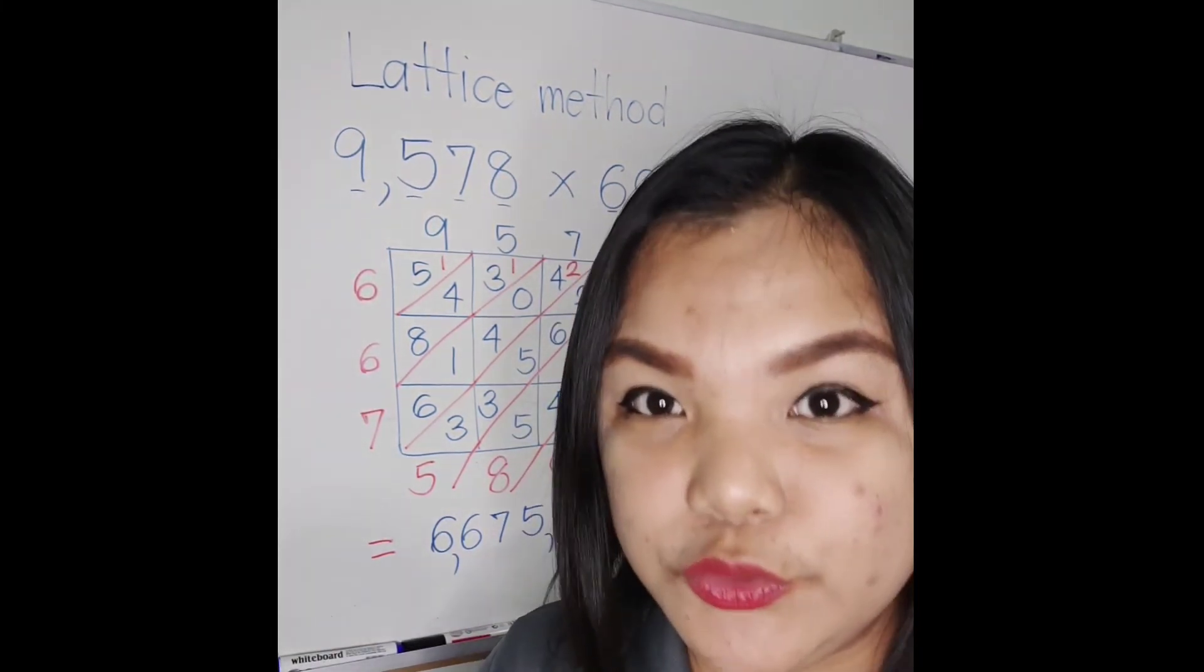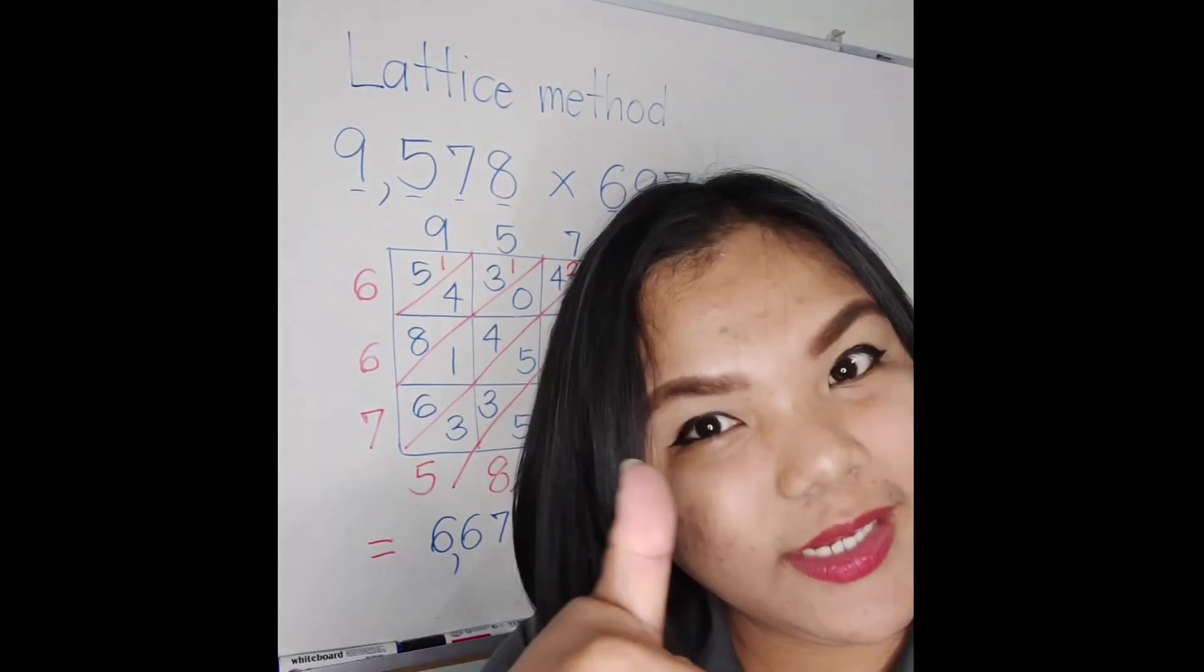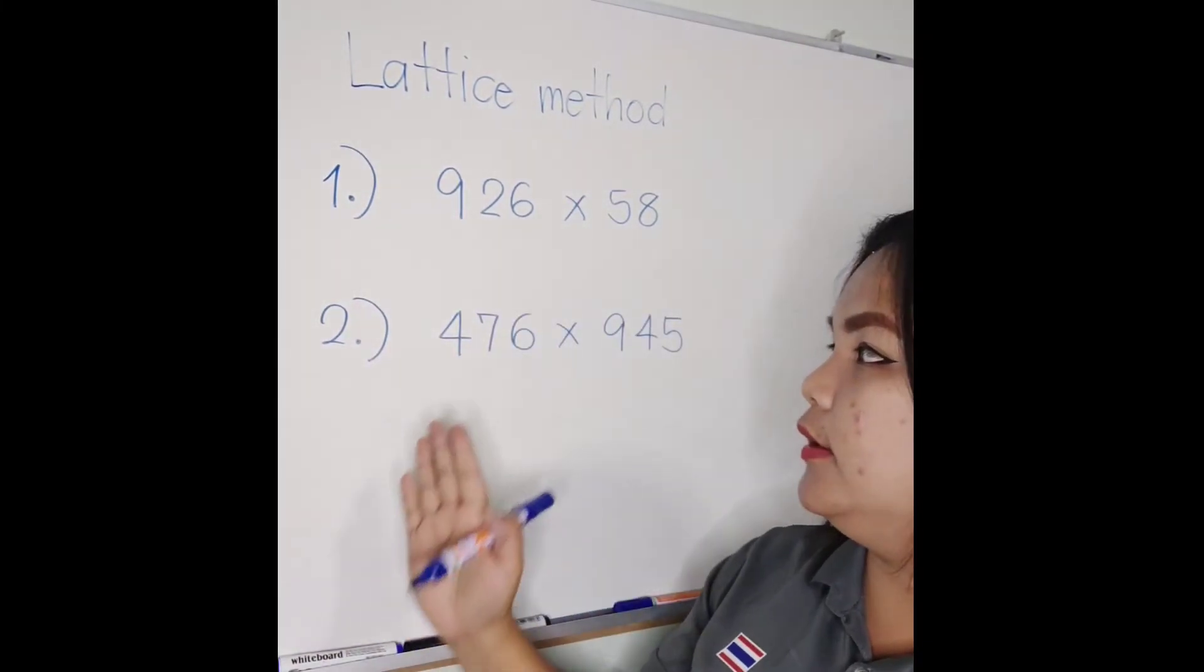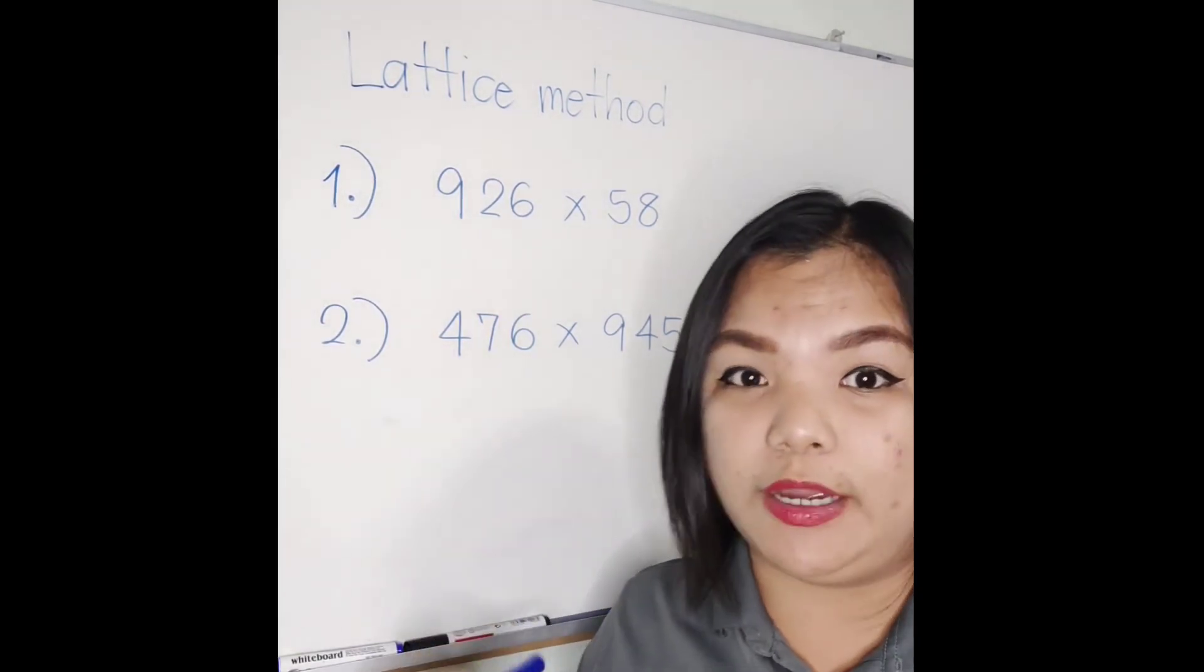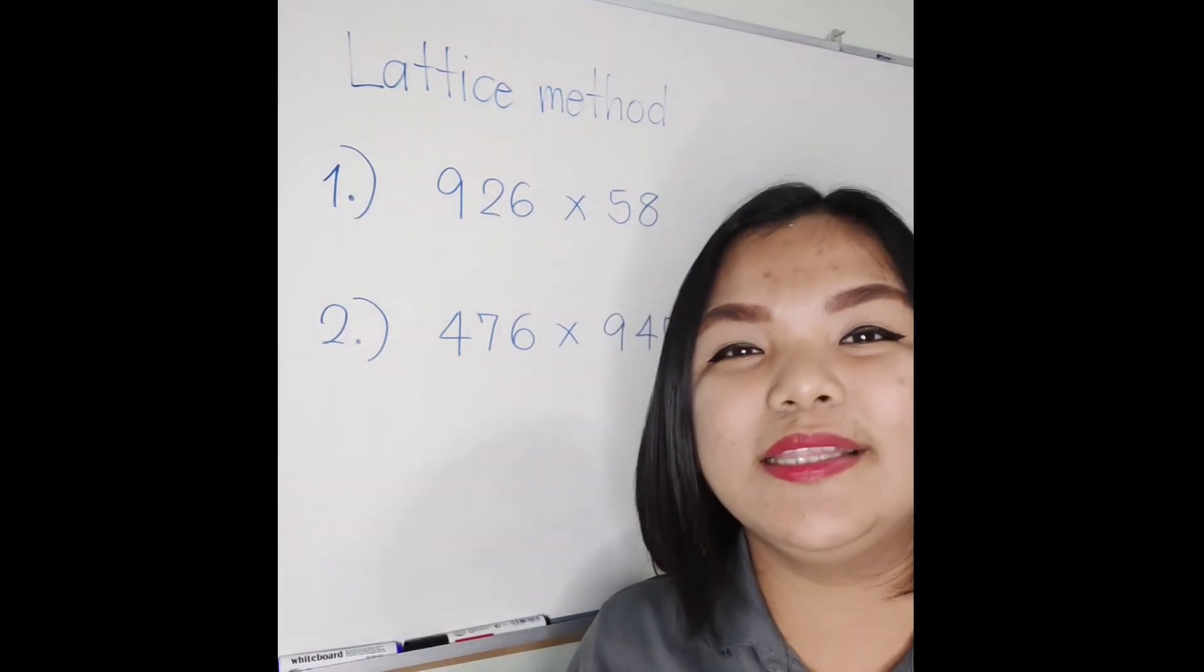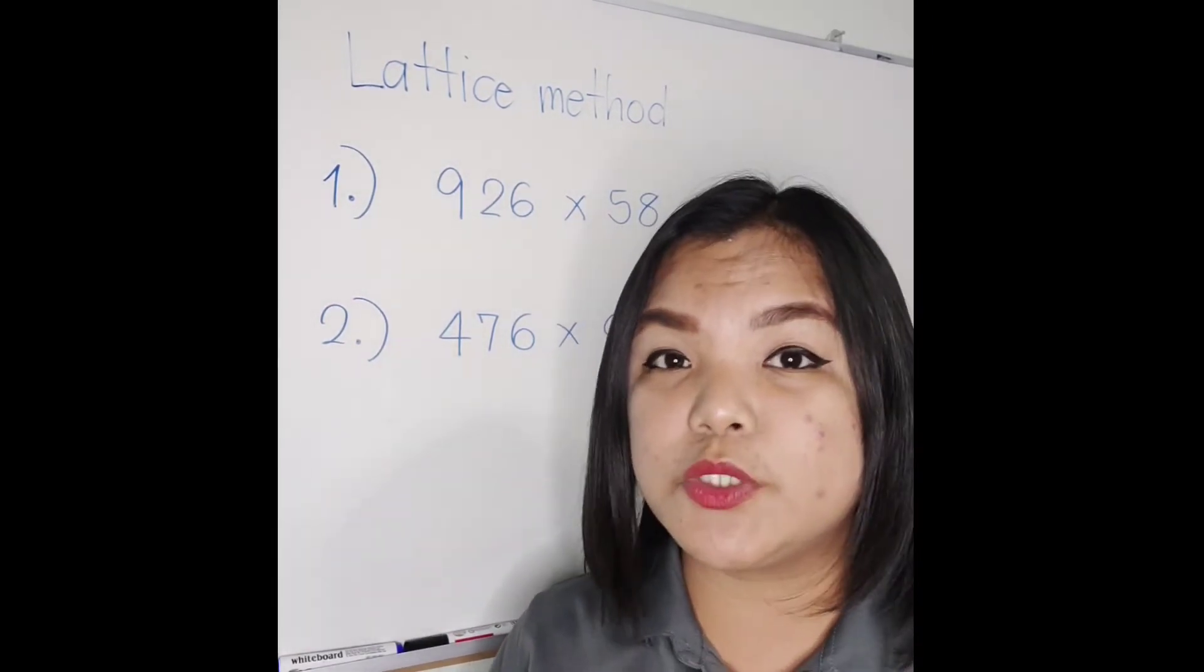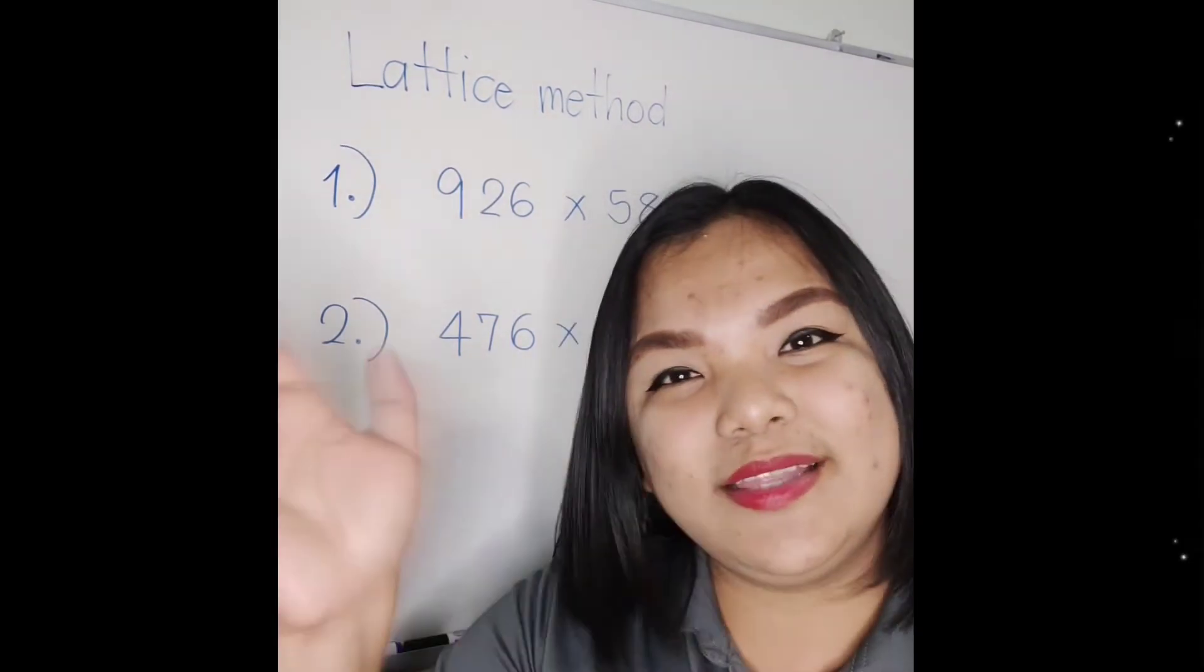So I'll give you two examples. Okay, oh, this one is for you. So we have 926 times 58, 476 times 945. Okay, show your answer below. And okay, so I'll repeat: this is not a trick, it is the other way of solving multiplication. That's it! Bye, thank you!